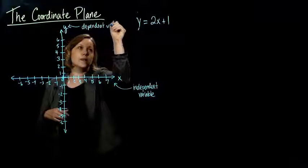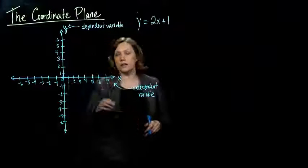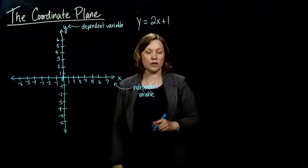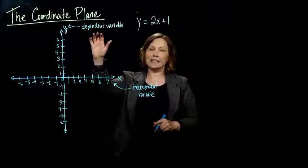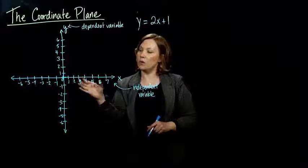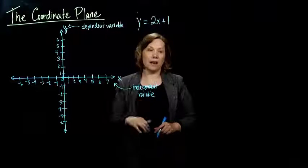And we'll talk a little bit more about that. So independent variable on the horizontal, and the dependent variable on the vertical. The reason why it's called the dependent variable is because usually, we're talking about something where we put numbers in for whatever is on the horizontal, and we get something out for the vertical.